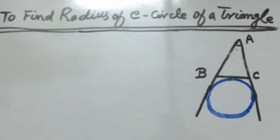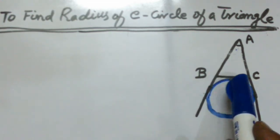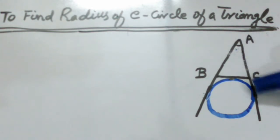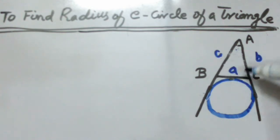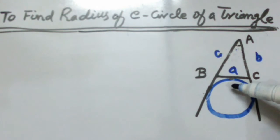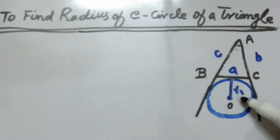The excircle of triangle ABC is a circle which touches one side of the triangle externally and the other two sides internally when those two sides are extended. This circle is called an E-circle. The radius of this circle is denoted by R1, and is called the E-radius.